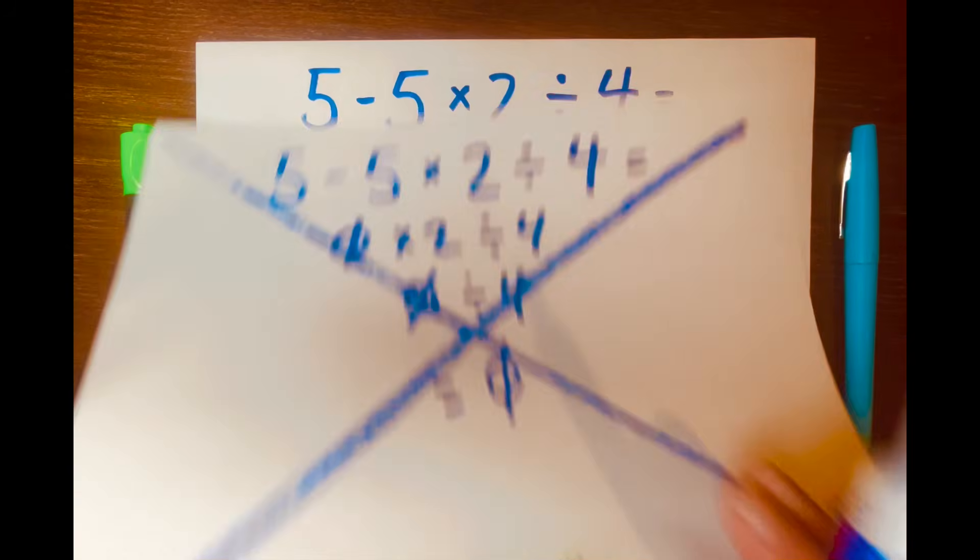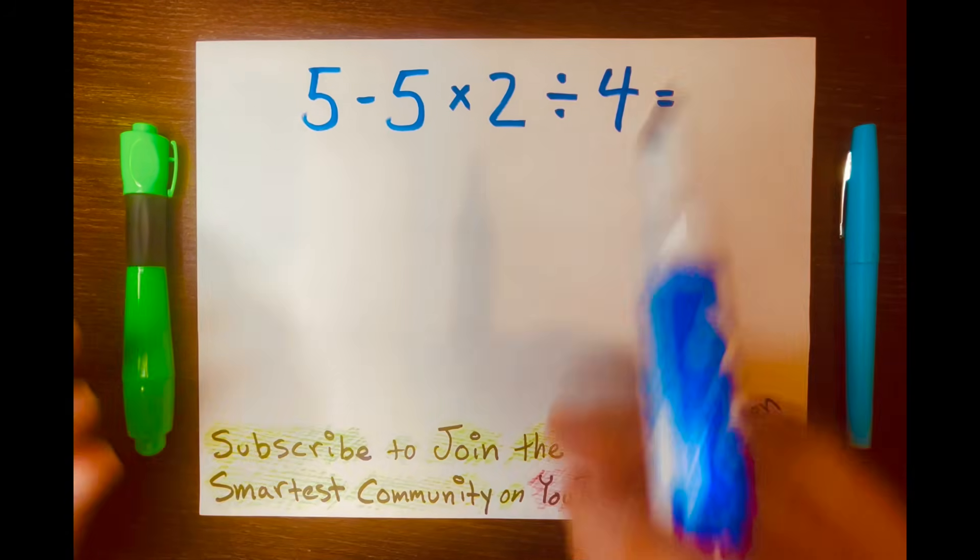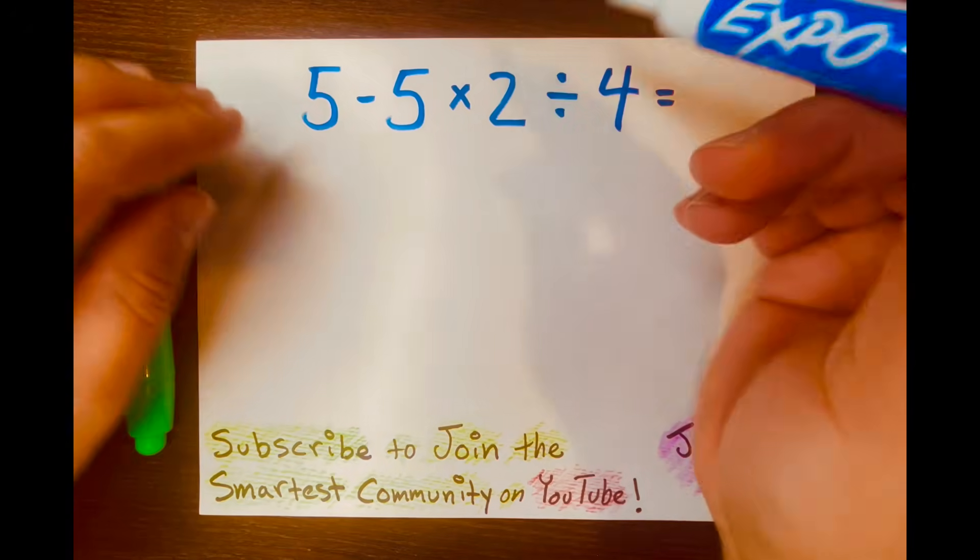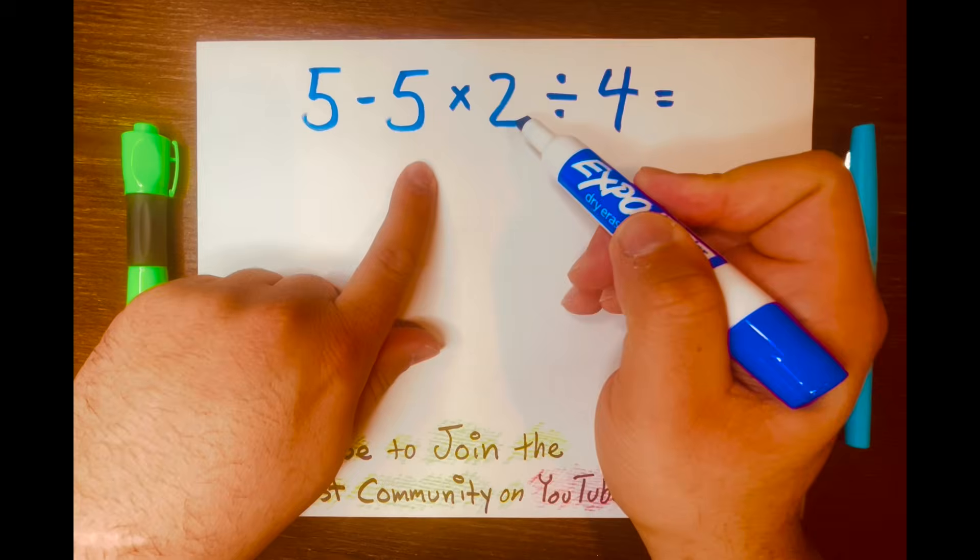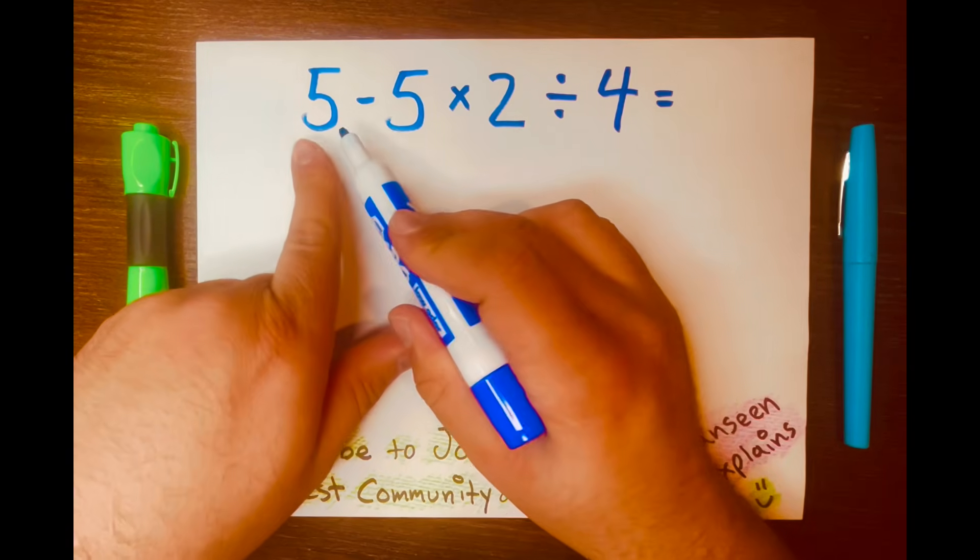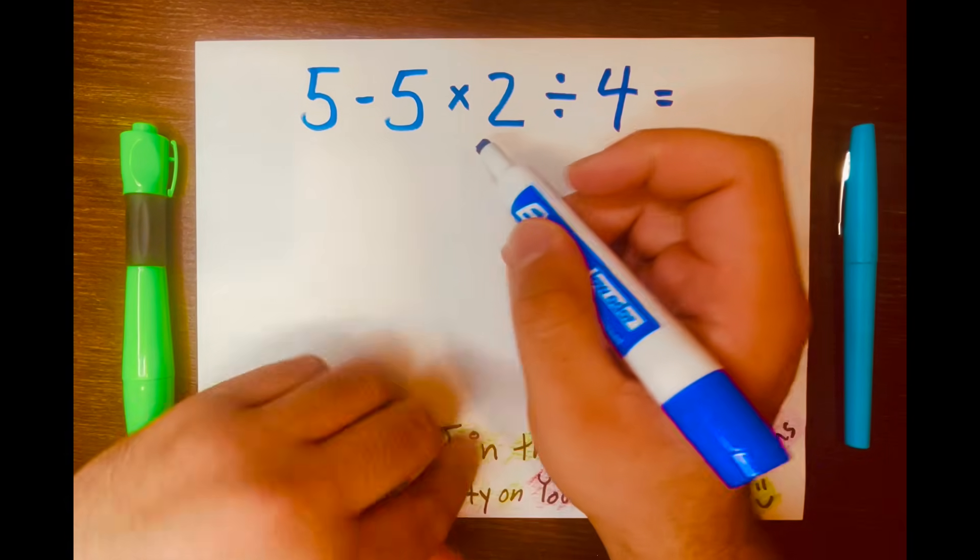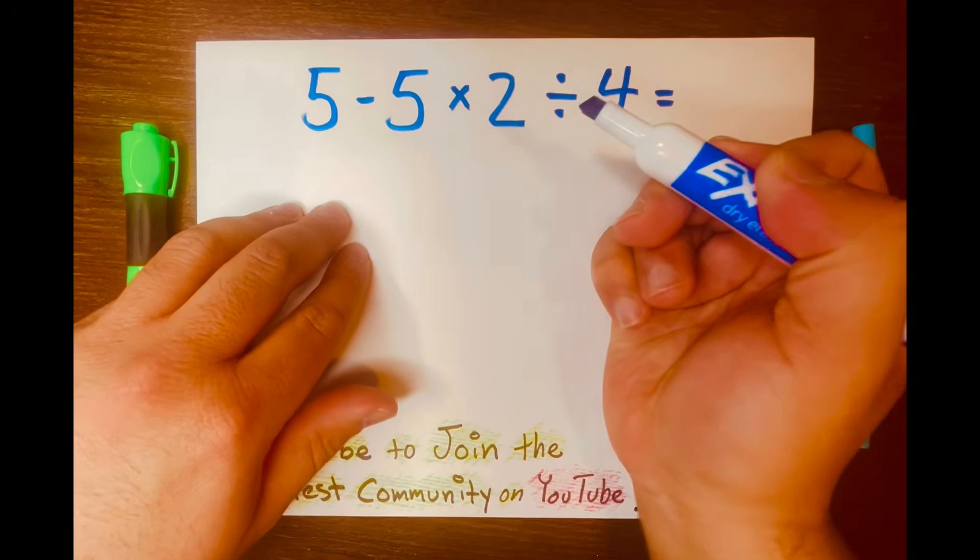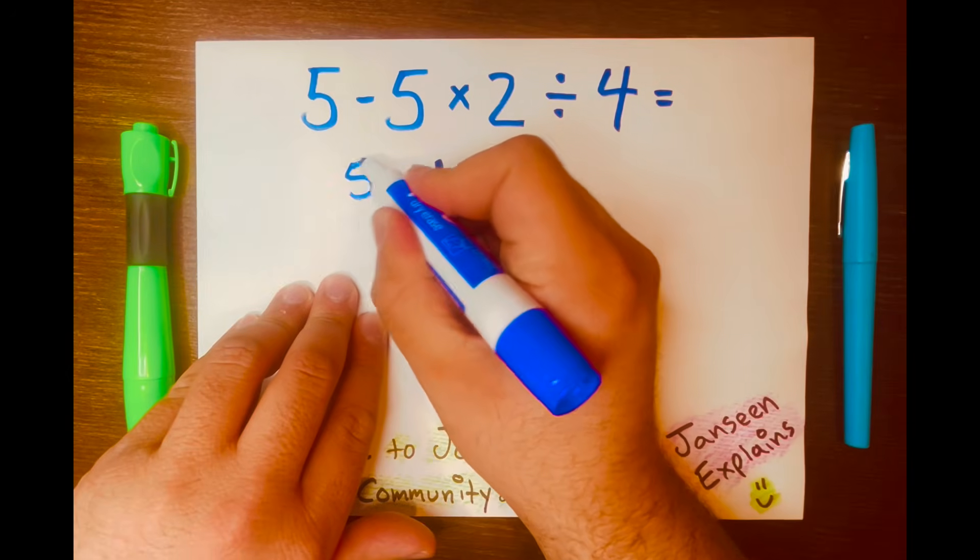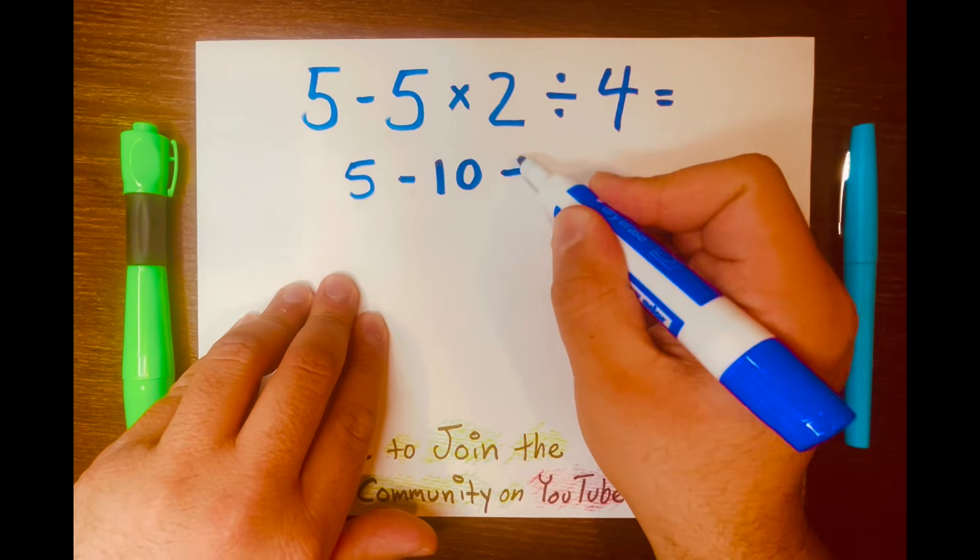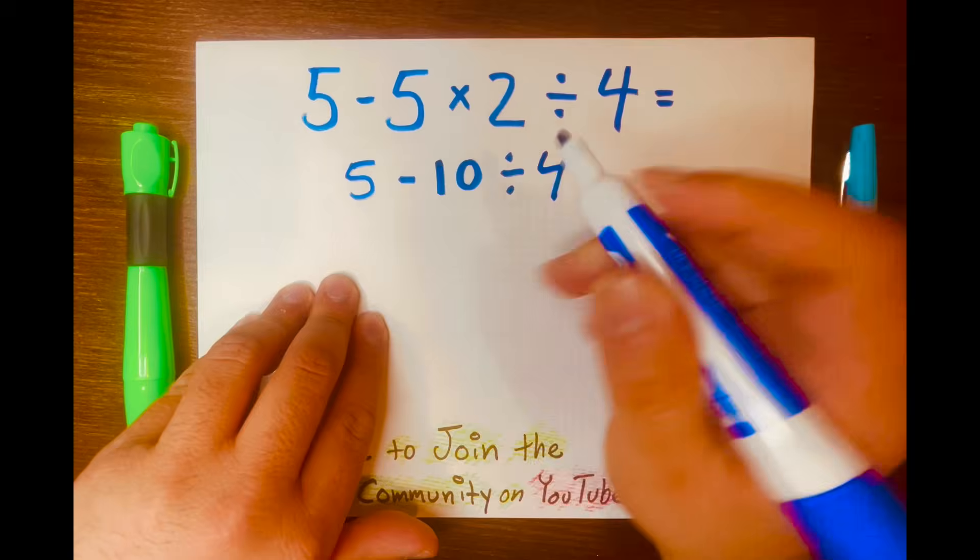Let me show you how to solve this math problem correctly. They did not use PEMDAS, and PEMDAS is telling me that 5 times 2 goes first, not 5 minus 5. So what is 5 times 2? 10. So I'll write the 10, bring down the 5 minus the division symbol down, and the 4 down.